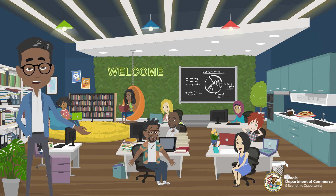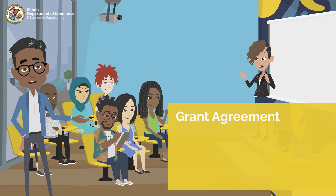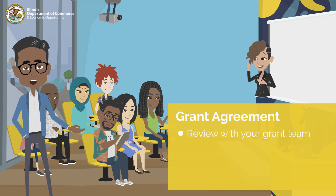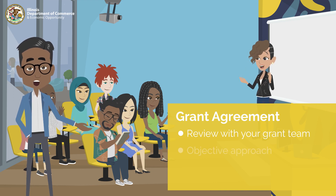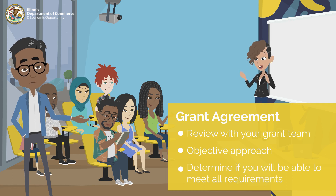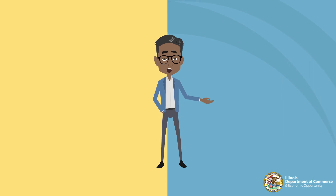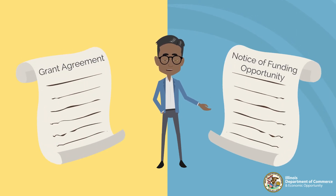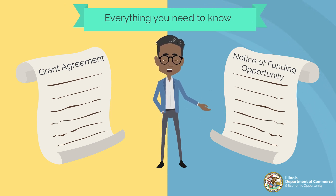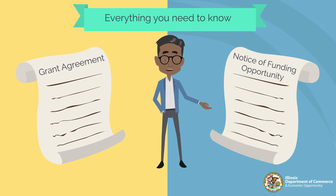Receiving a grant agreement is exciting in that it signals the kick-start to your grant program. Before jumping in and getting started, be sure to review the document thoroughly and break it down with your team to ensure understanding throughout your organization. Take an objective approach to your review and exercise your best judgment to determine if you will be able to meet all of the requirements needed to receive grant funds. If questions come up, always refer to your grant agreement and Notice of Funding Opportunity, or NOFO. Within these two documents, you'll find everything you need to know about your program. Using these two items as guides and references, you will be successful in the execution of your program.